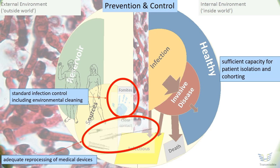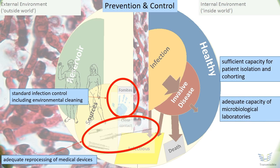Even with full preventive measures, there is always the risk that organisms from a patient's own skin or gut, such as Candida, may cause infection when the immune defenses are down. Therefore, adequate capacity of microbiological laboratories is another key element of preparedness, so that timely and correct diagnosis is possible. These are the basis for the prevention of transmission of any pathogen, including Candida auris in health care settings.